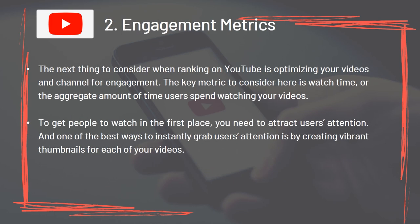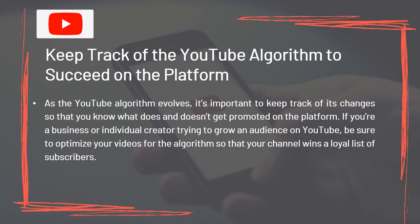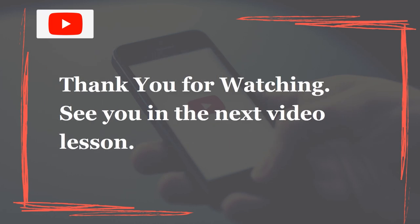For Engagement Metrics, the key metric to consider is watch time, or the aggregate amount of time users spend watching your videos. To get people to watch in the first place, you need to attract users' attention. One of the best ways to instantly grab users' attention is by creating vibrant thumbnails for each of your videos. As the YouTube algorithm evolves, it's important to keep track of its changes so that you know what does and doesn't get promoted on the platform. Be sure to optimize your videos for the algorithm so that your channel wins a loyal list of subscribers. Thank you for watching. See you in the next lesson.